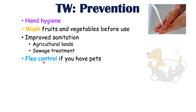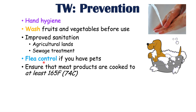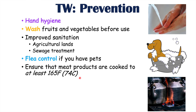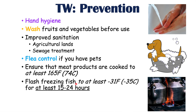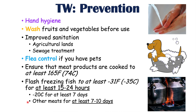Flea control is important if you have pets, as it can help reduce the risk of a Dipylidium caninum infection. Meat products should be cooked to at least 165°F (74°C) to help neutralize or kill cysticercae within the meat. Flash freezing fish can help neutralize Diphyllobothrium latum — at minus 31°F (minus 35°C) or lower for at least 15 to 24 hours, or at minus 20°C or lower for at least seven days. For certain meats, temperatures of minus 31°F (minus 35°C) for at least 7 to 10 days can also help neutralize cysticercae.